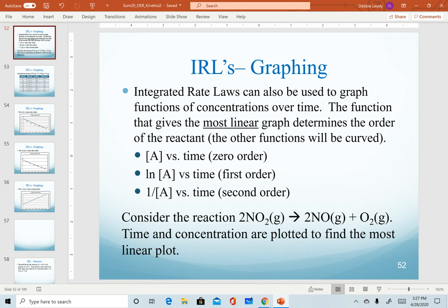So we can plot or we can measure concentrations of reactants over time. We can take various functions of those concentrations, just concentration, natural log, or inverse of concentration. We can plot each one versus time. The one that gives us the most linear graph determines the order.